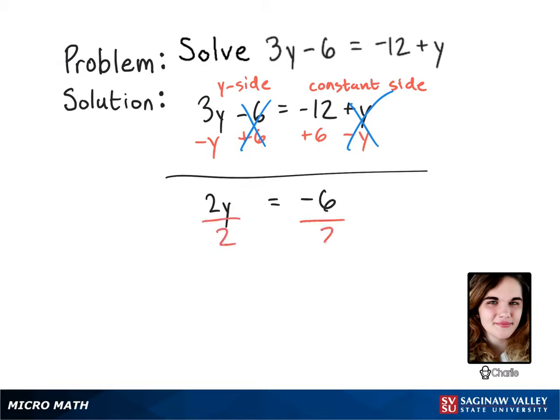I'm going to divide both sides by the coefficient, which is 2. On the left, now we have y by itself. And on the right, we have negative 6 divided by 2, which is negative 3. So the answer is negative 3.